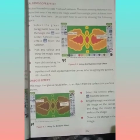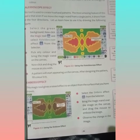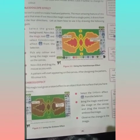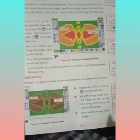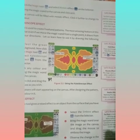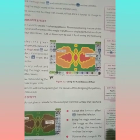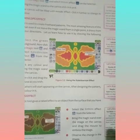The third effect is the Emboss effect. Using this magic tool gives a raised relief effect to an object from the surface that you have drawn. To use it: select the Emboss effect from the selector, bring the magic wand over the image on the canvas, and drag the mouse to emboss the image. Observe the changes in the image.